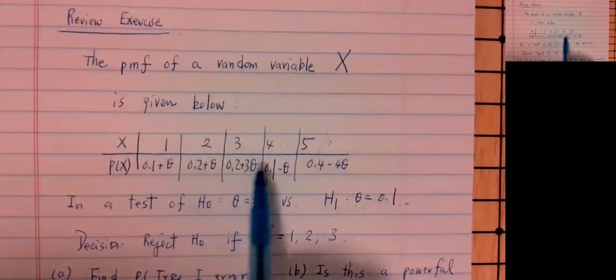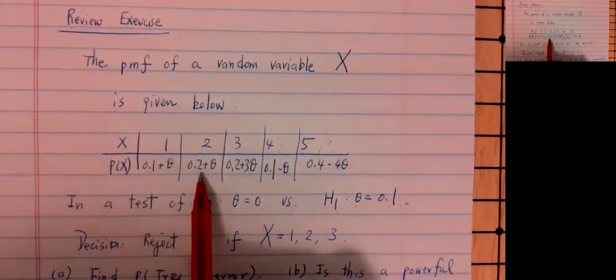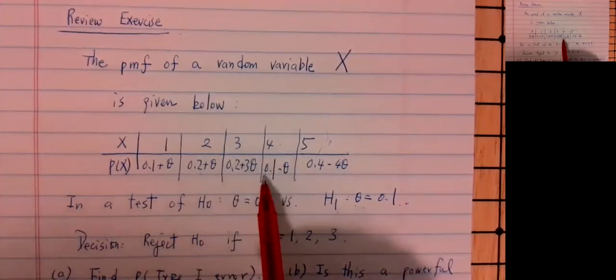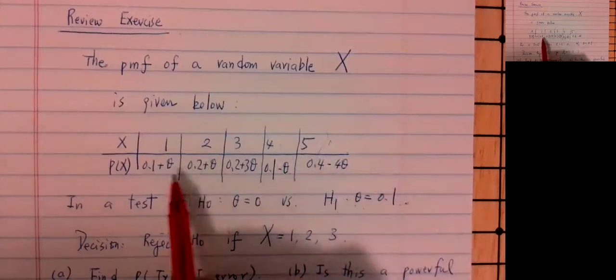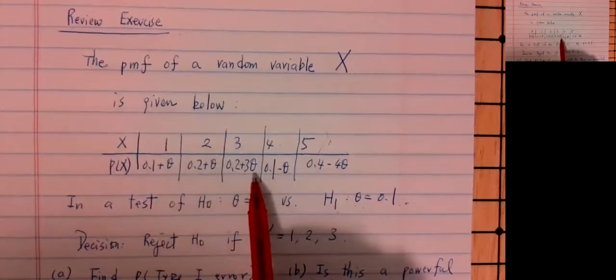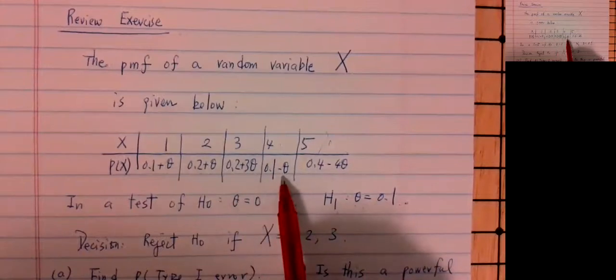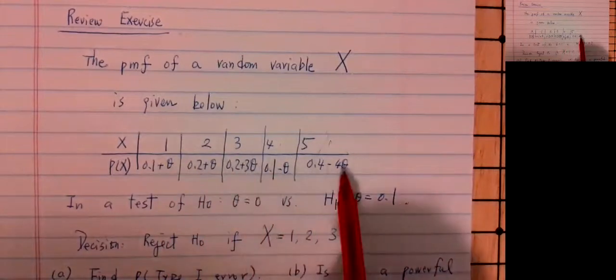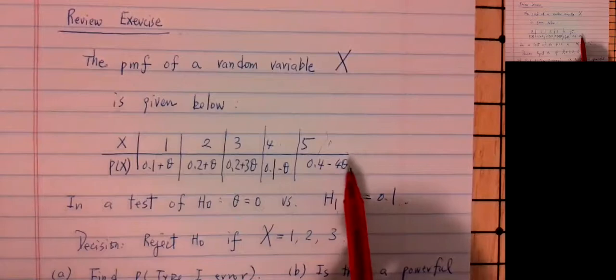This is a PMF, so we need to check that the probabilities add up to 1. Adding the constant parts: 0.1 plus 0.2 is 0.3, plus 0.3 is 0.5 more, wait — 0.3 plus 0.2 is 0.5, plus 0.1 is 0.6, plus 0.4 is 1. The theta components sum to 5 theta minus 4 theta, giving zero net contribution. So if you add up all five probabilities they add up to 1 — this is a legitimate PMF.